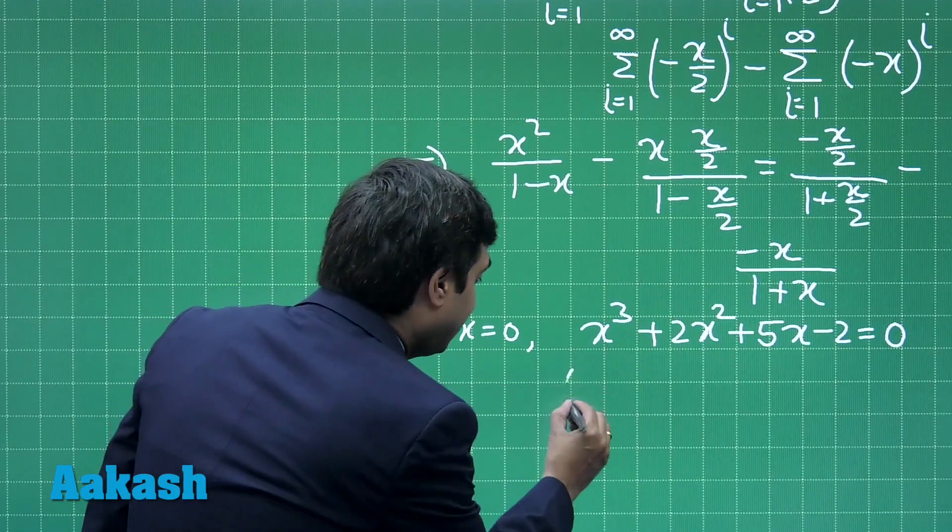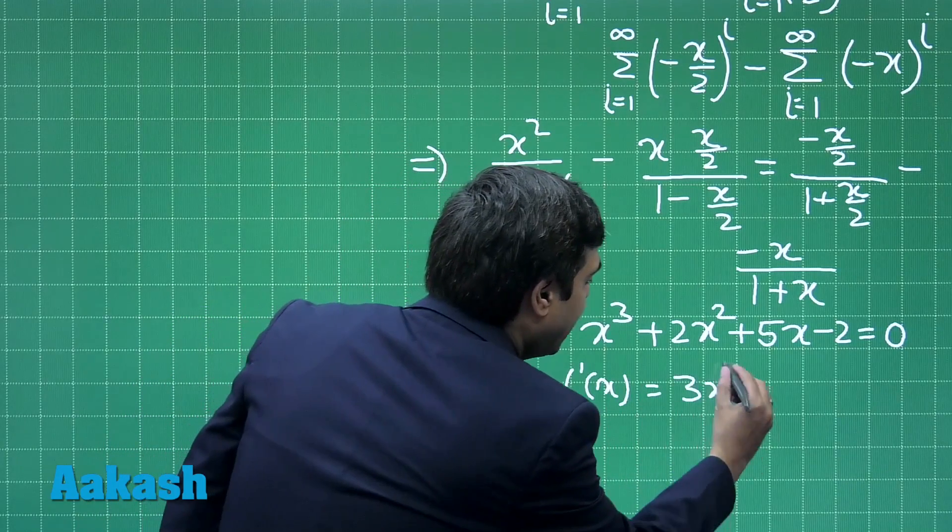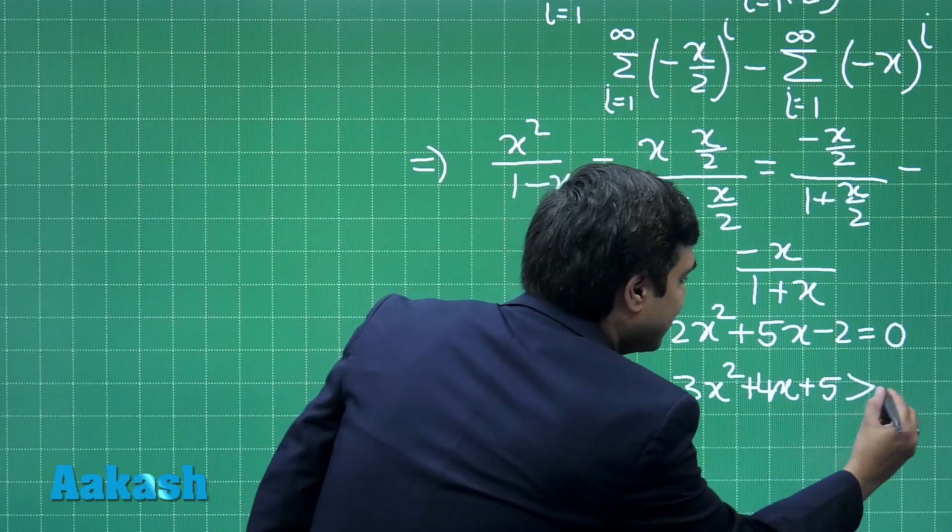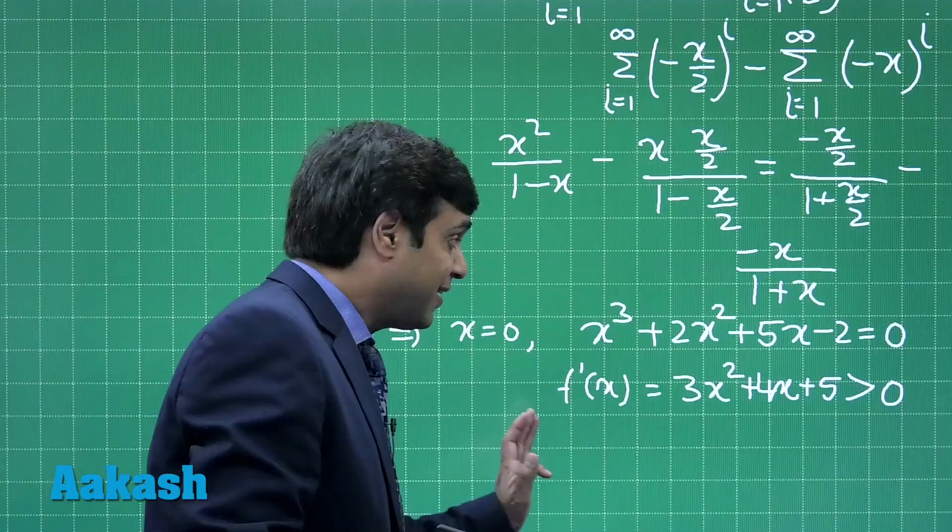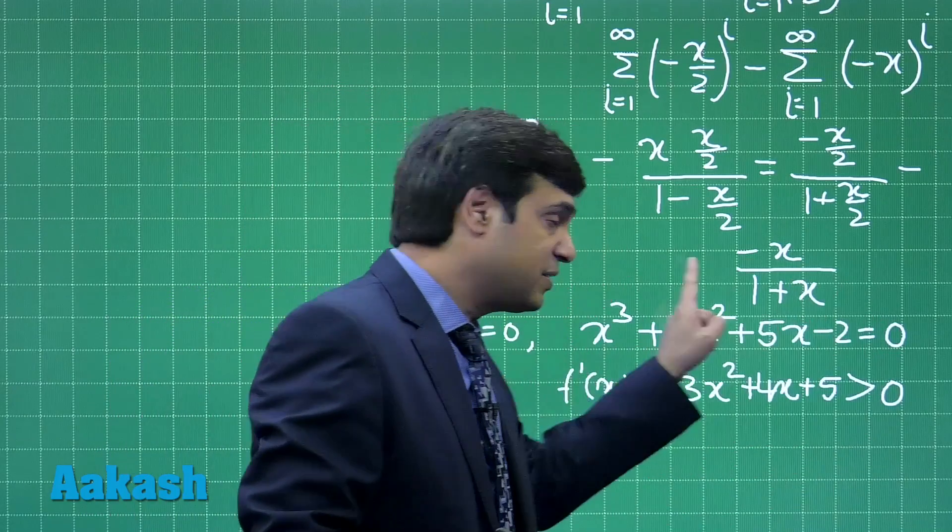If we consider this one as f(x), then we can see the derivative of this one, that is f'(x) comes 3 x square plus 4 x plus 5 which is clearly positive, meaning that it is strictly increasing. So, there exists exactly 1 root of this equation.